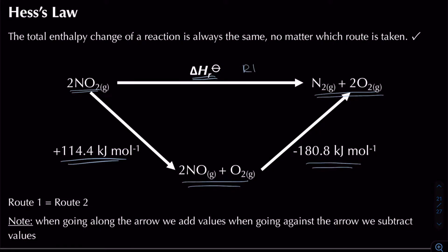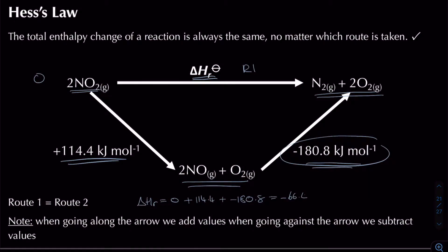Starting from zero, the enthalpy change of reaction equals zero, plus 114.4 kJ/mol, plus minus 180.8 kJ/mol, giving a final value of minus 66.4 kJ/mol. That's how we calculate an unknown reaction enthalpy from existing reaction enthalpies.